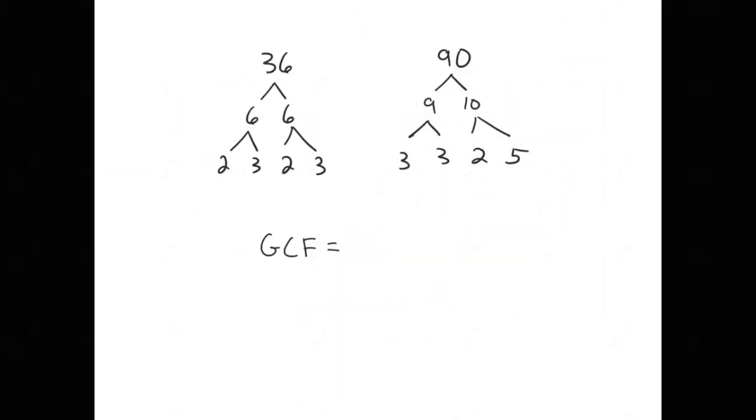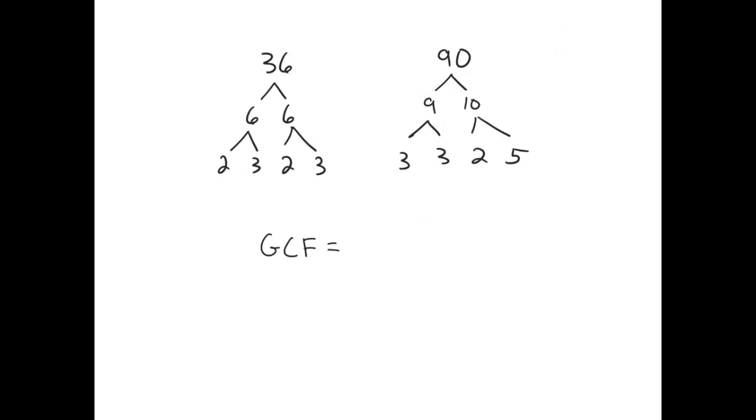Here's another example. I already have the prime factorization trees done, and now I'm going to write down what the greatest common factor is. The first thing I'm going to notice is that there's a 2 here and a 2 here, so I'm going to write down the 2. Then I notice I've got a 3 here and a 3 here, so I'm going to write down the 3. And then I notice that I have another 3 that can be paired up with this 3, so I'll write down my third 3. And then I'm going to multiply those two numbers together. 2 times 3 times 3. 2 times 3 is 6, times 3 is 18.